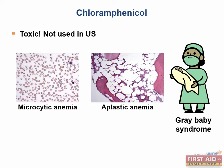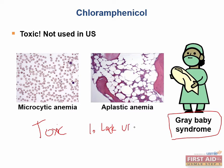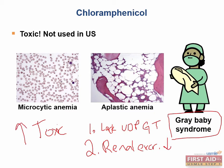In infants, chloramphenicol can cause gray baby syndrome — a life-threatening disease caused by the accumulation of toxic chloramphenicol metabolites. These metabolites accumulate dangerously in babies for two key reasons: first, babies lack the enzyme UDP-glucuronosyltransferase and therefore cannot metabolize the drug. Second, there is reduced renal excretion in babies, so the toxic metabolites build up to dangerous levels.